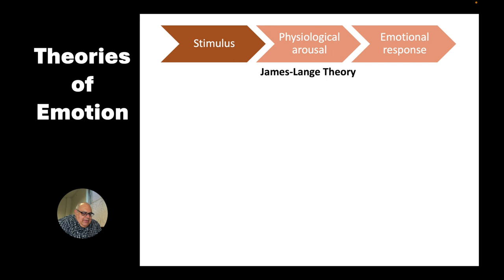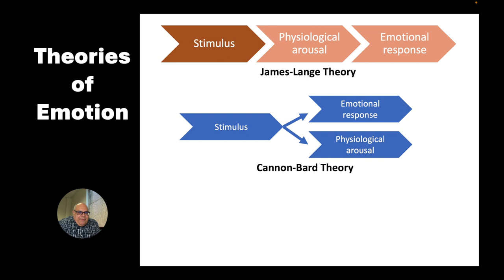A slightly different view comes from Cannon and Bard, and they put forward what is called the Cannon-Bard theory. The Cannon-Bard theory has the same starting point — there's some stimulus that we perceive in the world around us. But they argue that instead of going through the sequence James and Lange saw as key — stimulus, then physiological response, then emotional response — Cannon and Bard see the emotional response and the physiological arousal state as happening at the same time. They explain this by arguing that different organ systems are involved: physiological arousal is mostly a result of the endocrine system, our system of glands in the body, while the emotional response is centered in our brains.